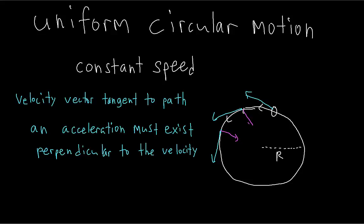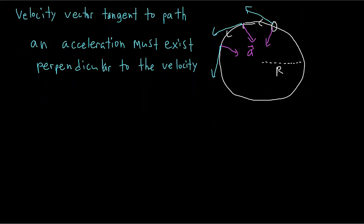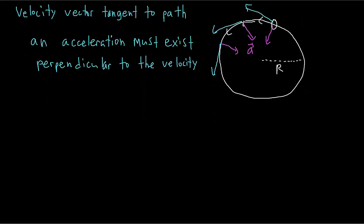So we must have some sort of acceleration pointing towards the center of the circle, because that's the direction in which the velocity vector is trying to turn — and it is perpendicular to the velocity vector.